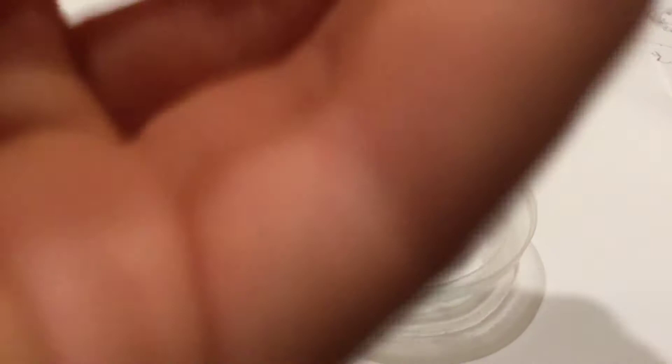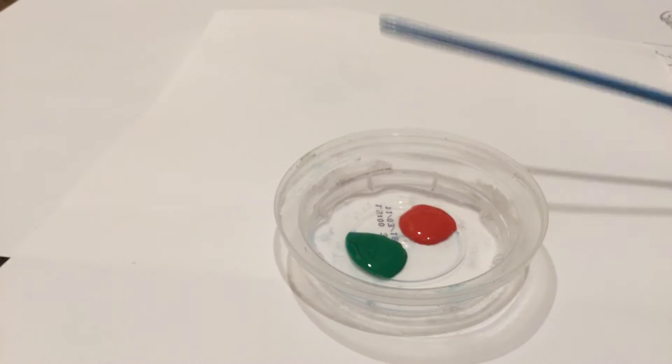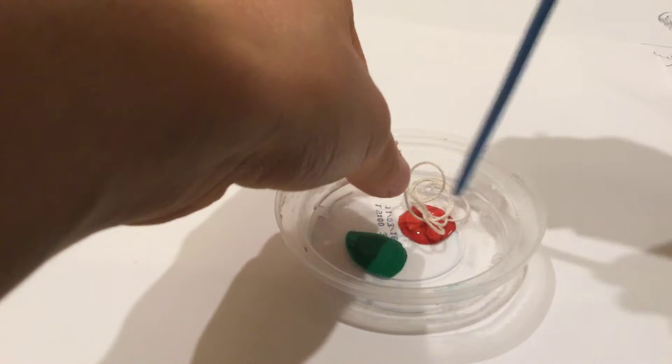I'm actually going to use something to dip it in. I'm going to use the end of this paint brush to dip it into the paint because I don't want to get my hands dirty. So I'm going to be putting this string into the red paint and you can just flip it around.